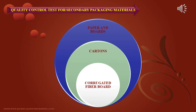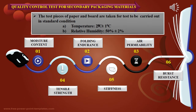Moving on to quality control tests for secondary packaging materials. Secondary packaging materials include papers and boards, cottons, and corrugated fiber board. General tests for these materials require test pieces to be conditioned at a standard temperature of 23°C ± 1°C and relative humidity of 50% ± 2%. Tests carried out for paper and board include moisture content, folding endurance, air permeability, tensile strength, stiffness, and burst resistance.